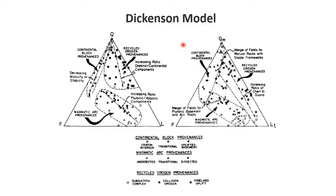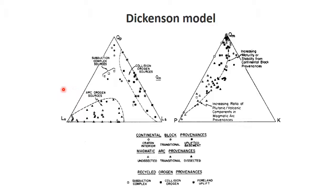The Dickinson model presents data in ternary diagrams with a qualitative analysis — circling areas of provenance such as continental block provenance, recycled origin provenance, and magmatic arc provenance. This is done for multiple ternary diagram combinations. In some diagrams we also see compositional lines that may represent certain processes, similar to what was observed in the soil study.